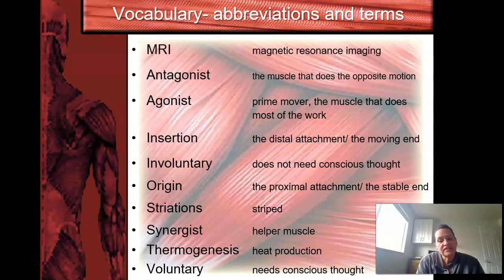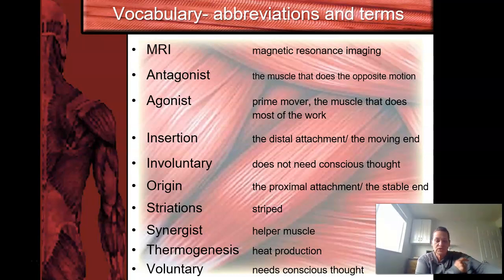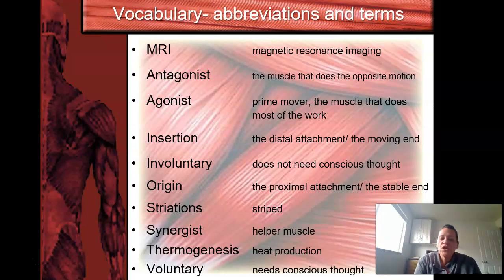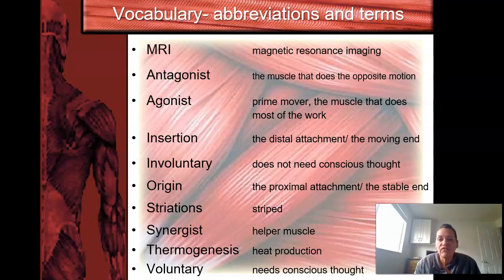The origin is the proximal attachment or the stable end. For example, the muscle originates at the humerus, crosses the elbow, and attaches down in the forearm. The origin end stays still, and the insertion end is the one moving towards the origin. Involuntary means it does not need conscious thought — it just happens on its own. Striations are the stripes visible in certain muscles. A synergist is a helper muscle. Thermogenesis means heat production. Voluntary means it needs conscious thought — your brain sends a signal telling it to move.